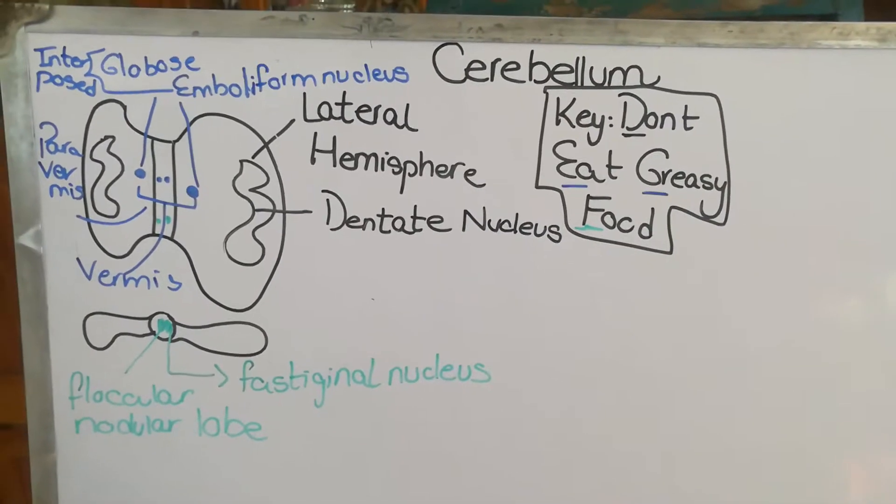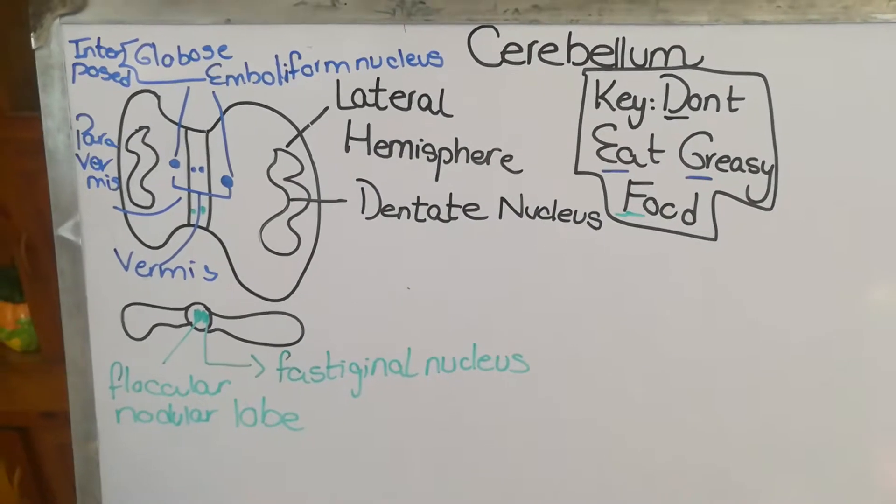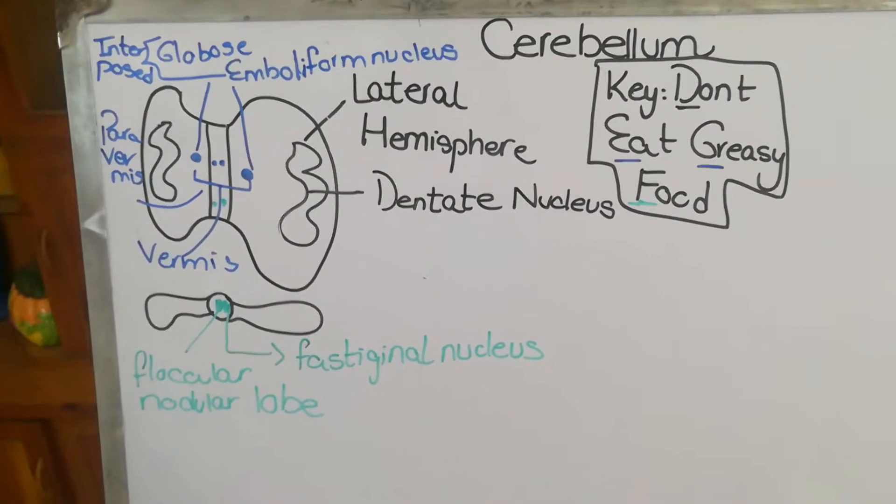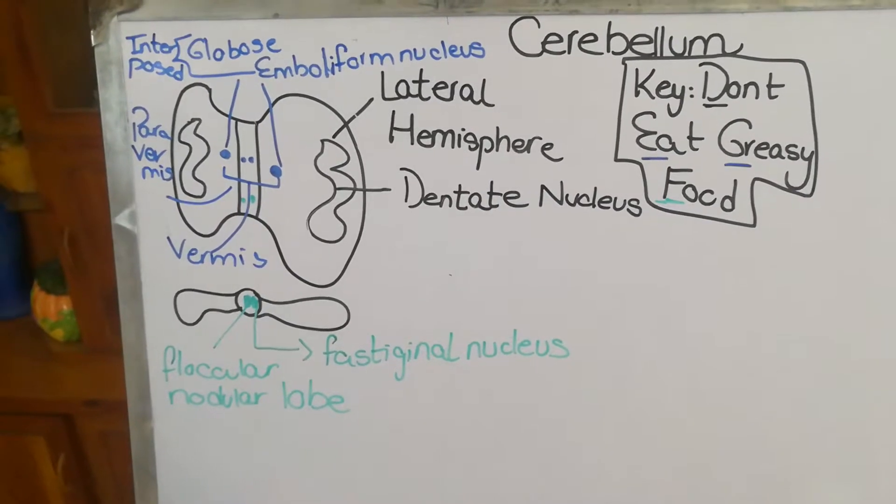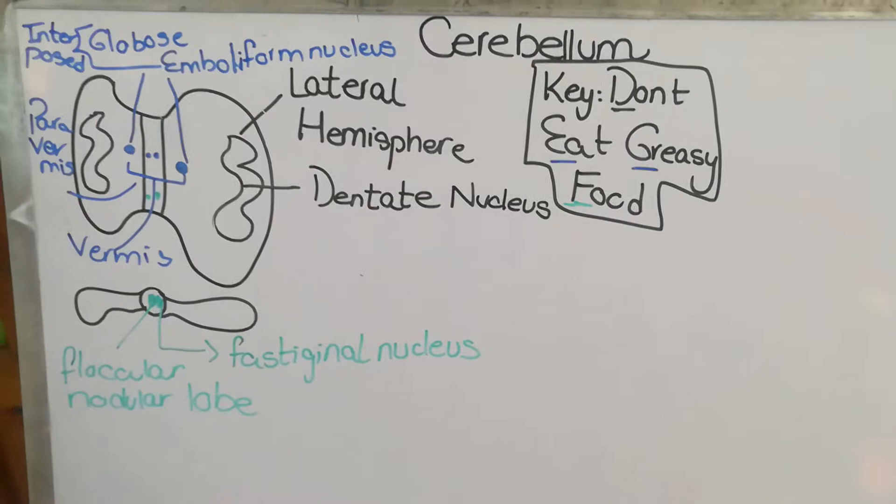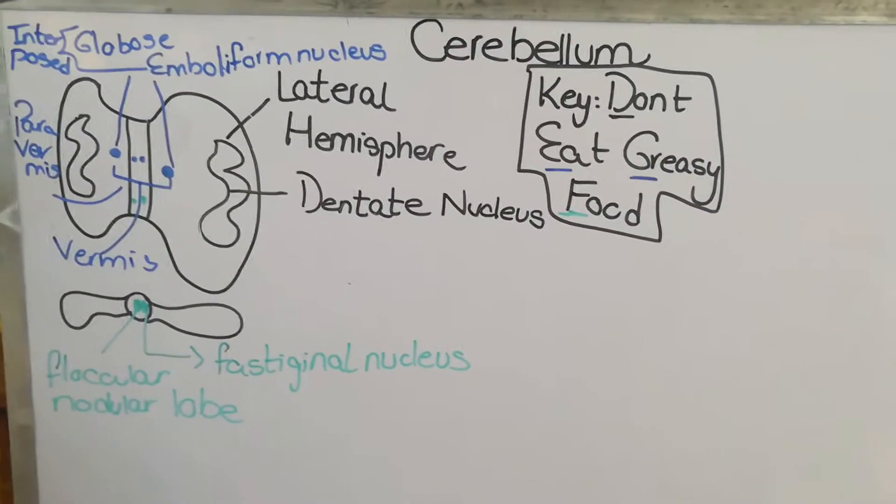In our last lecture, we studied the general features of the cerebellum. We learned what the cerebellum is and its functions. Then we studied the different lobes: anterior, posterior, and flocculonodular lobe, and how those lobes are connected with their performance of functions.